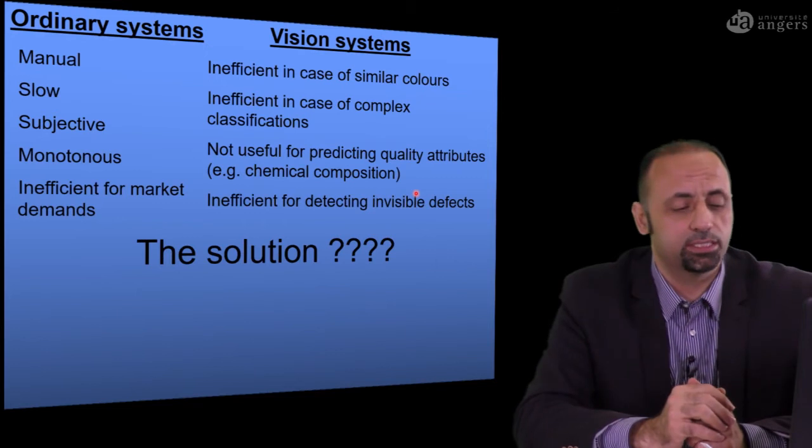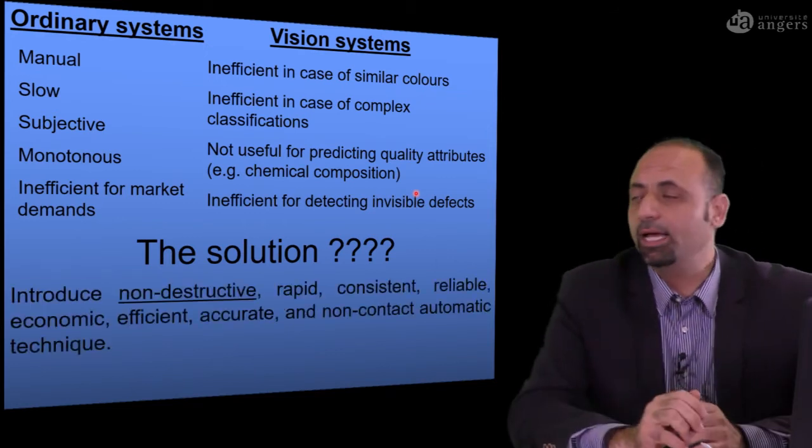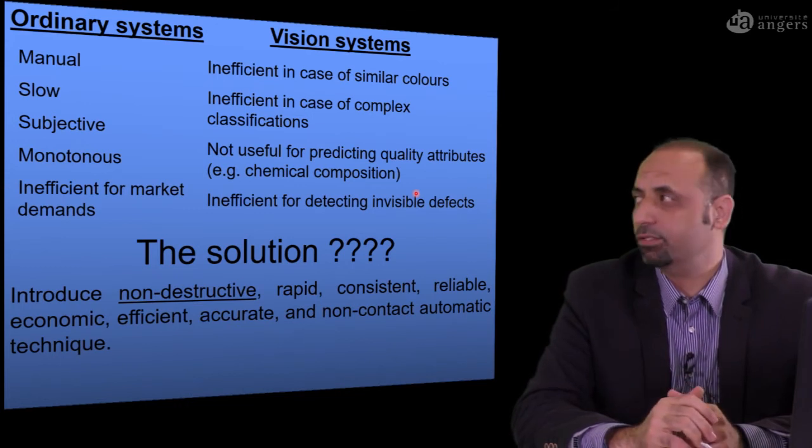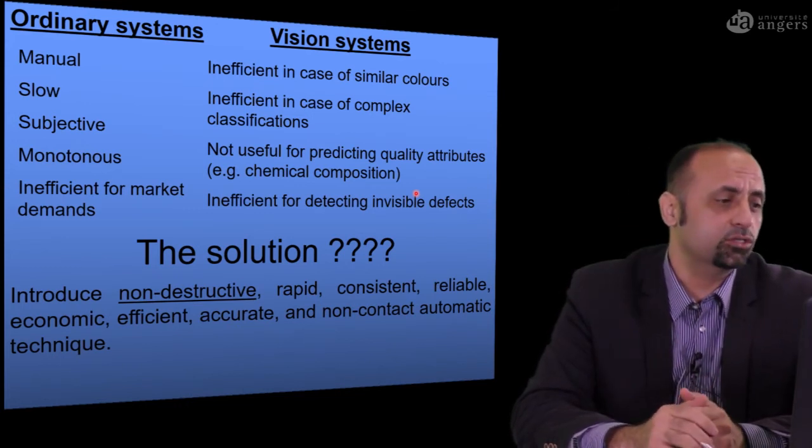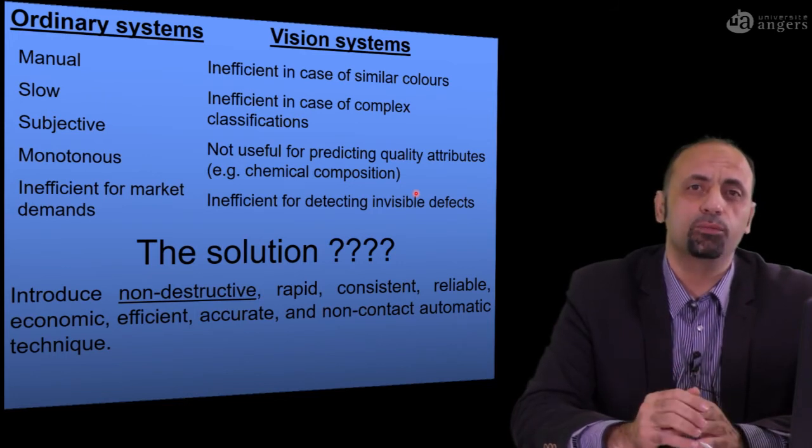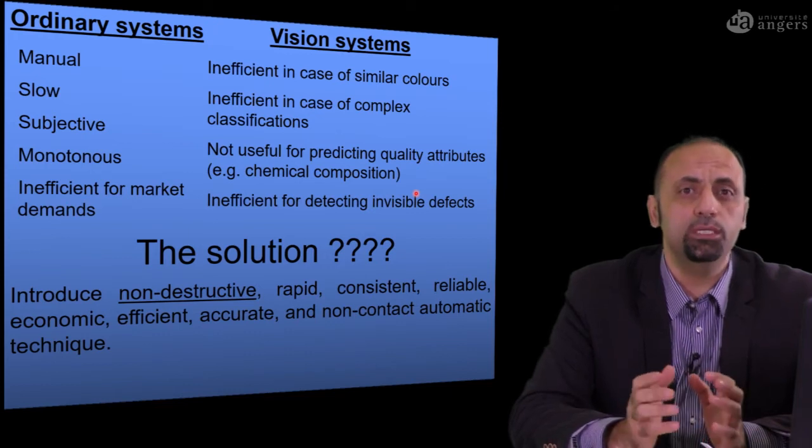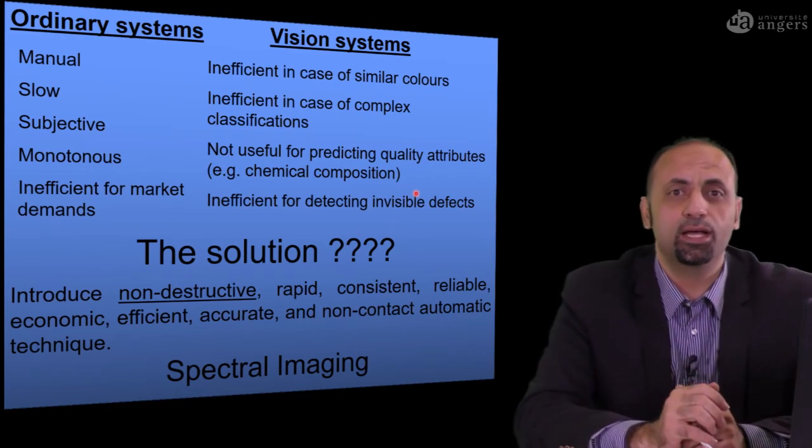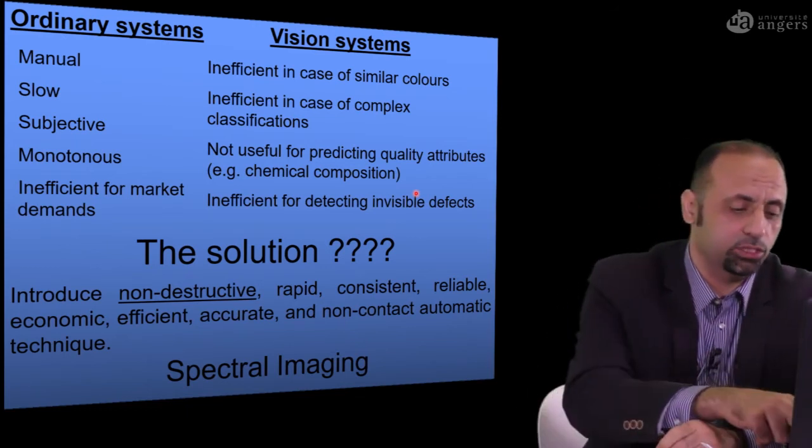So what is the solution? The solution is to find a technology that can fulfill a lot of parameters and characteristics. It should be non-destructive, rapid, consistent, reliable, give you information for internal quality parameters, and should be overall non-contact and automatic. All of these parameters could be found in spectral imaging.